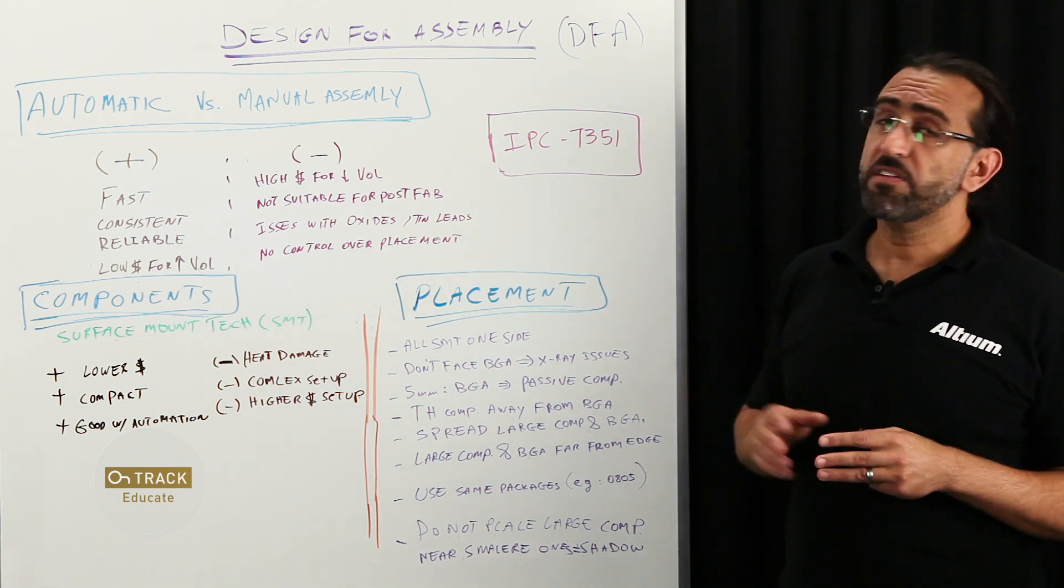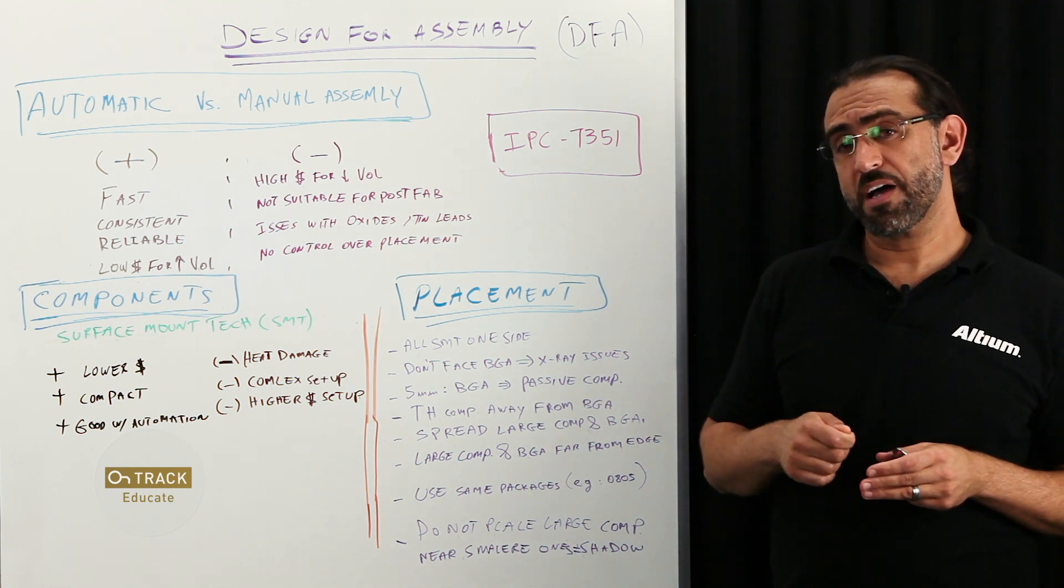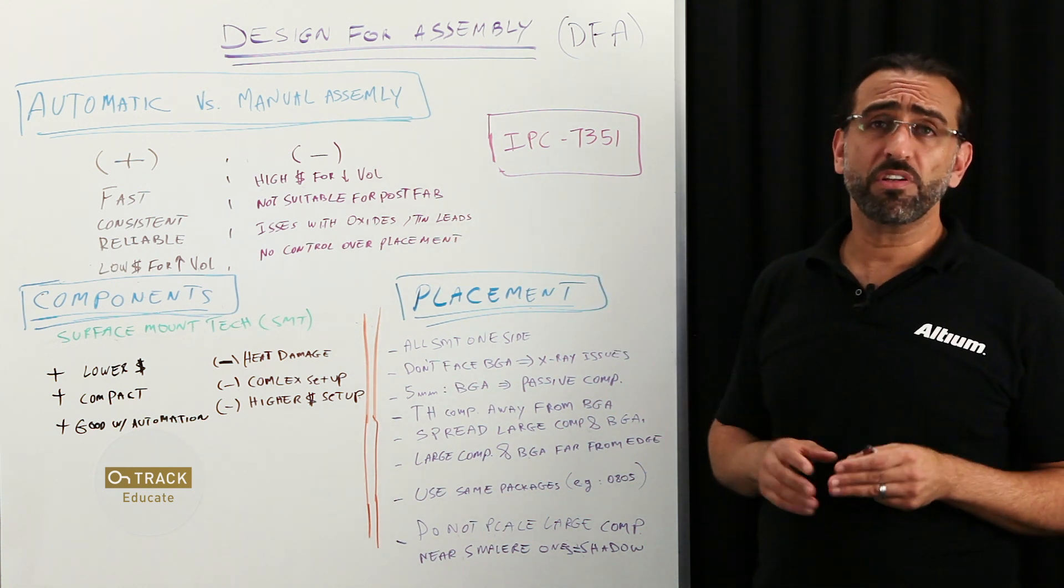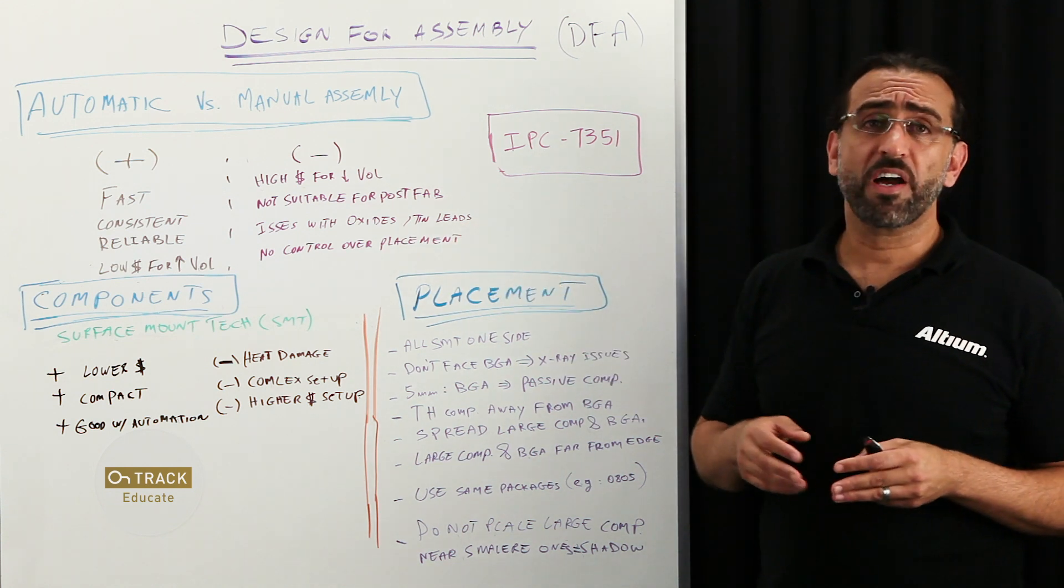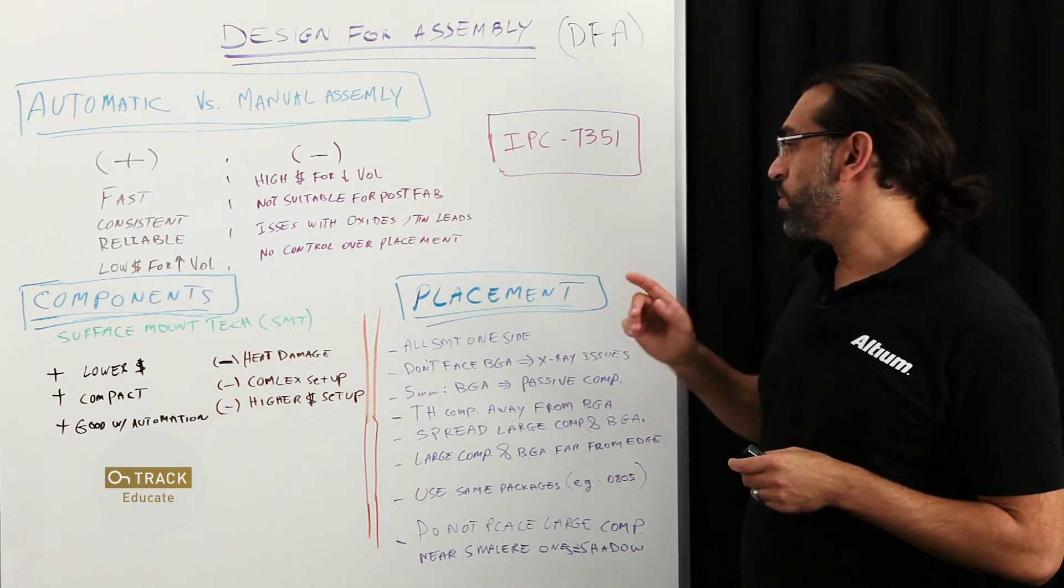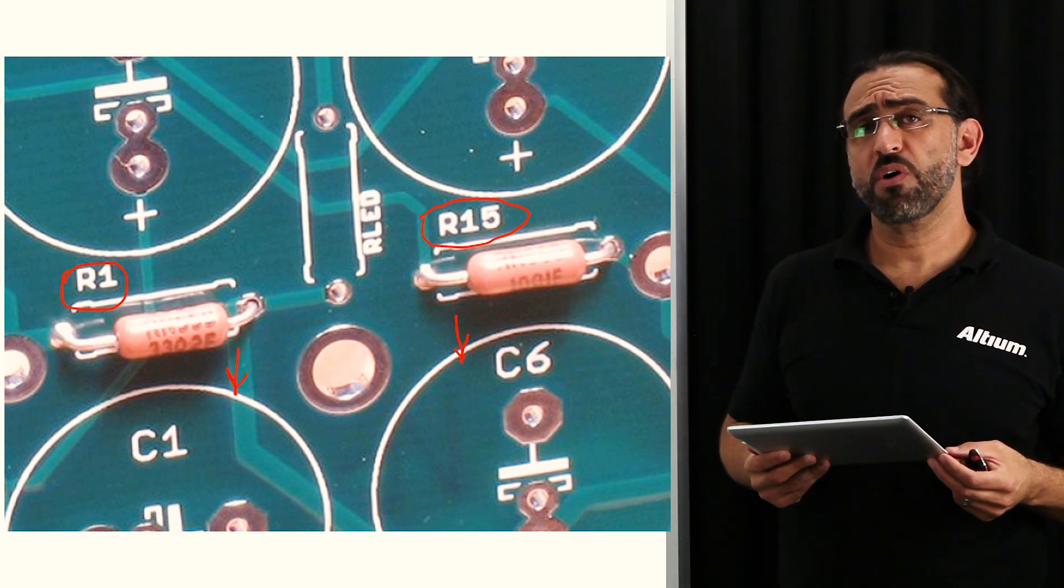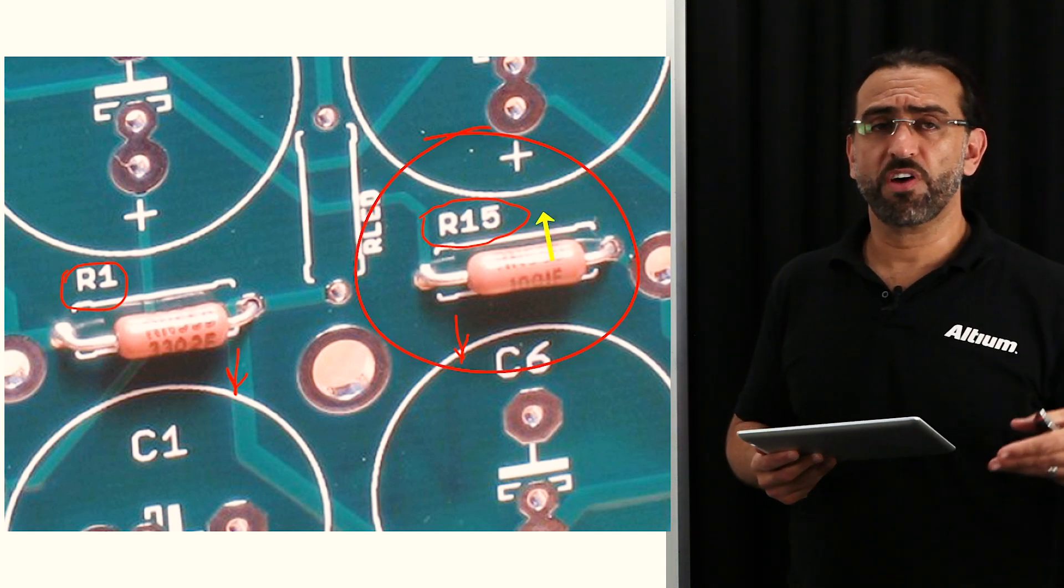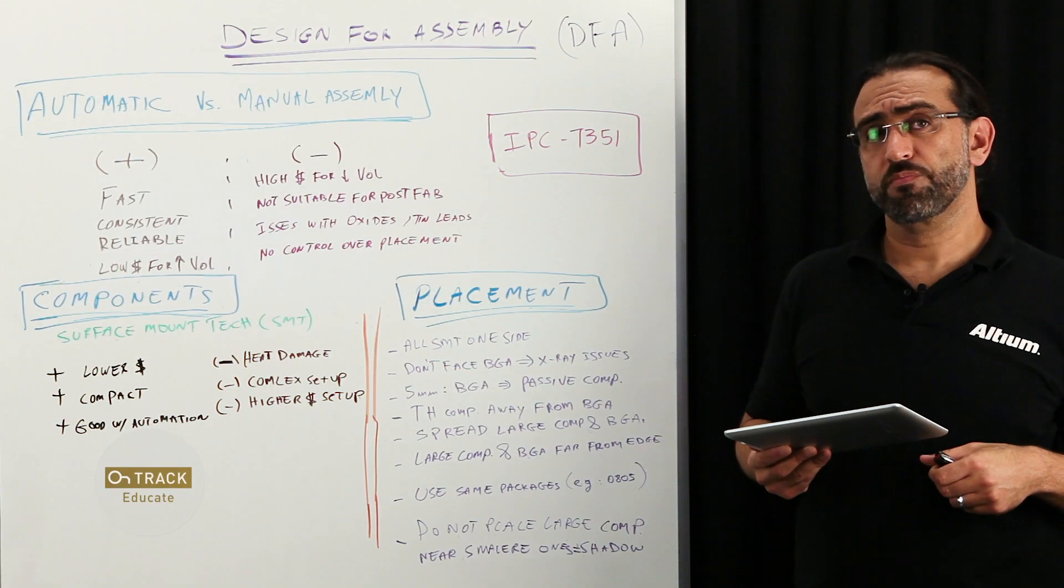automated process is not cost effective for low volume, as we mentioned earlier. When you consider the setup time and the cost that is required to do so, it might not be suitable for boards that require additional final work or other installation post-automation assembly process. Definitely the issue with oxides and tin, it's very hard to remove them from leads if your application requires you to do so. And no control over your placement, as we can see in this image, the disadvantage here is you don't have control over where, for example, as we can see here, R15, if it fell on the other side, on the top side, it could cover the reference designator.